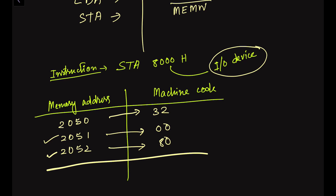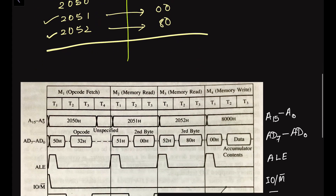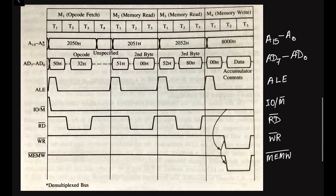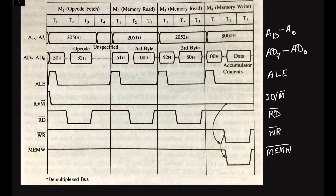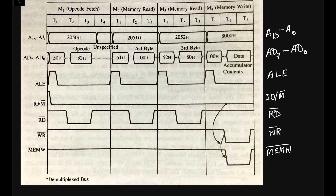The STA instruction requires four machine cycles as shown in the timing diagram. The first machine cycle is the opcode fetch. Then we have two memory read machine cycles, followed by one memory write machine cycle. We use memory read and memory write because the given instruction is in memory mapped input output format.